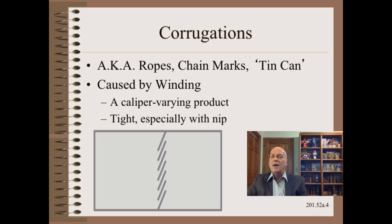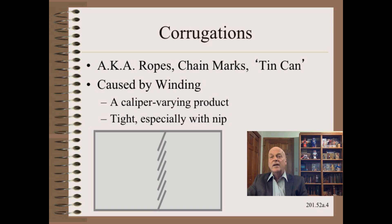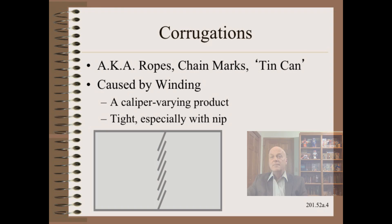However, the principle is much bigger than this. In principle, any tight or loose defect might be improved by oscillation. Oscillation is especially helpful when the defect is narrow and where there is a risk of tight and loose defects in the same roll at the same time — not an uncommon situation.